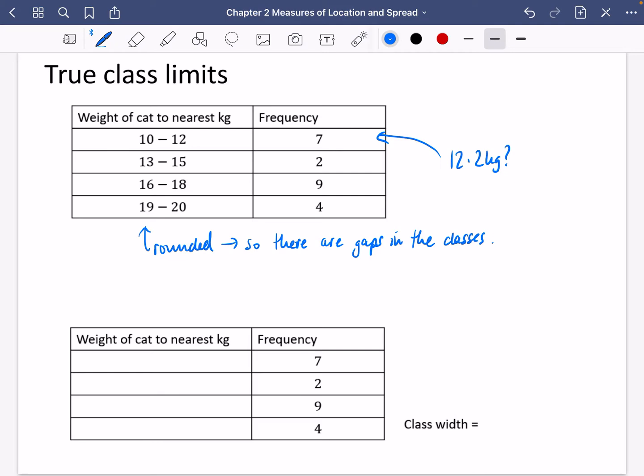So I think that the 10 to 12 group actually can contain something from 9.5 and including 9.5, and I've put W for weight all the way up to 12.5. I think I've used the less than sign because if it was actually equal to 12.5, I would have rounded it up to 13, and I would have put this cat inside this group that we've got here.